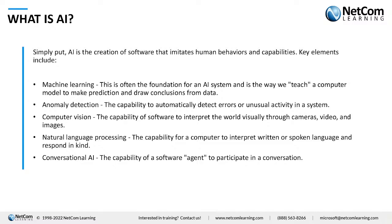Next is conversational AI. It might seem similar to natural language processing, but it's different. Conversational AI is about having a conversation with a computer — not just speaking to it. You may have seen chatbots: they respond based on your input so that it seems like you're talking to a real person who can provide help. All of these — machine learning, anomaly detection, computer vision, NLP, conversational AI — are forms of AI. AI does not mean a robot roaming around in Terminator wars.